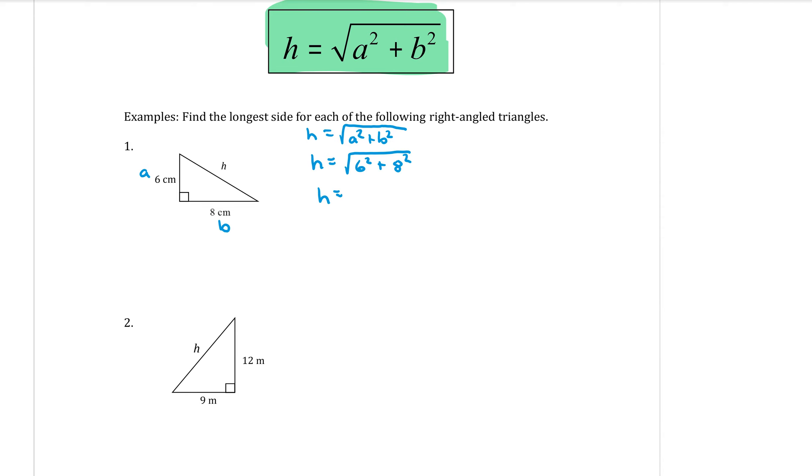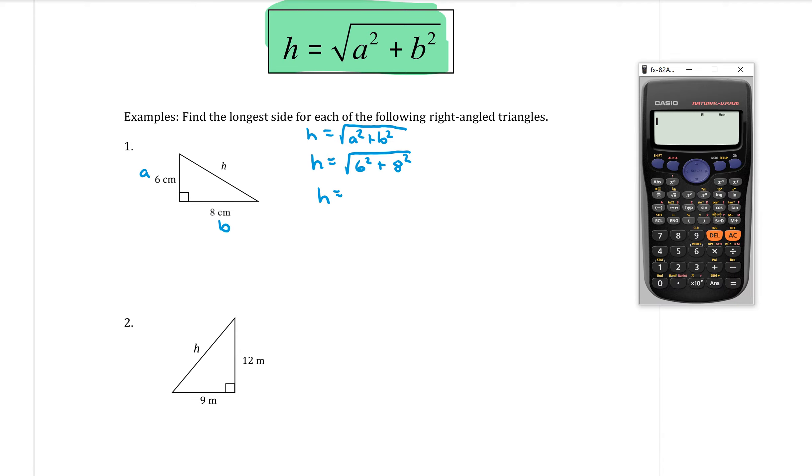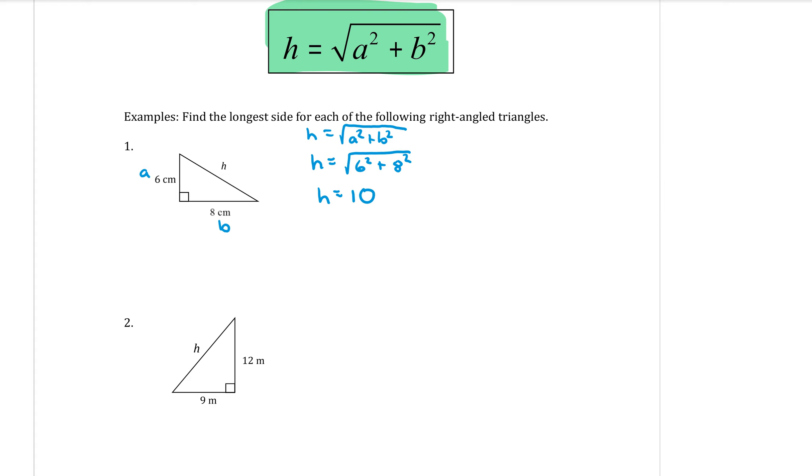From that line there, you'll need to grab your calculator and you need to type in that big square root sign. So square root 6 squared plus 8 squared and equals. And so that equals 10. Now, because this is the length of a side, we need to remember units. So because these two sides are in centimetres, my hypotenuse is going to be 10 centimetres.